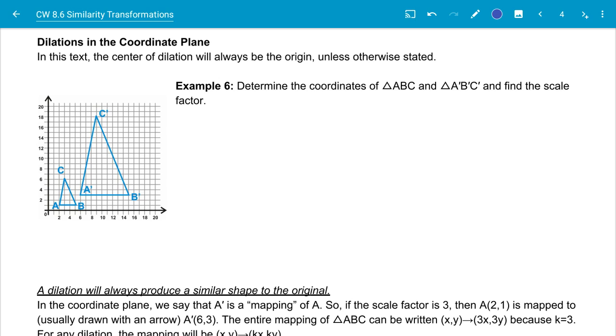For example number six, it says determine the coordinates of A, B, C, and A prime, B prime, C prime, and find the scale factor. So we know that it's a dilation. The dilation is going to be at the origin, which is at 0, 0 on our graph. Let's take a look at this.